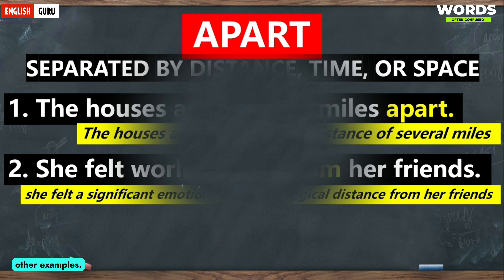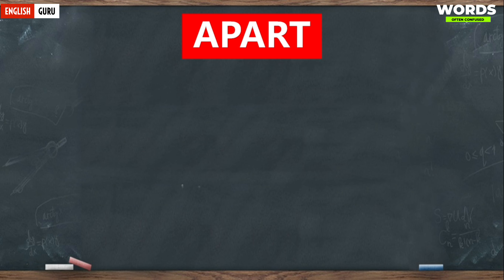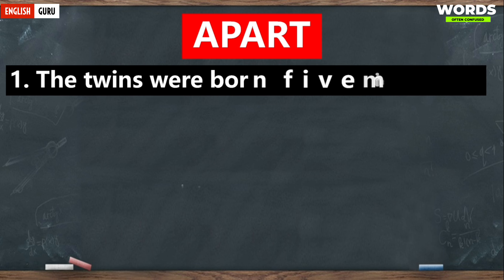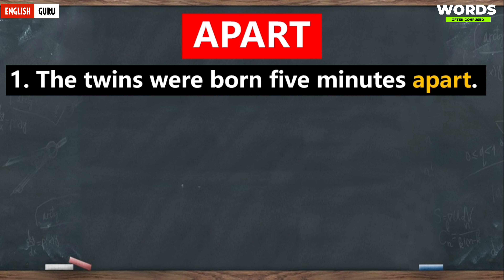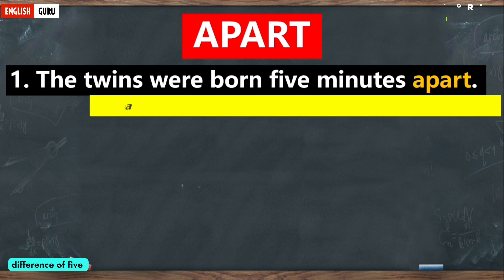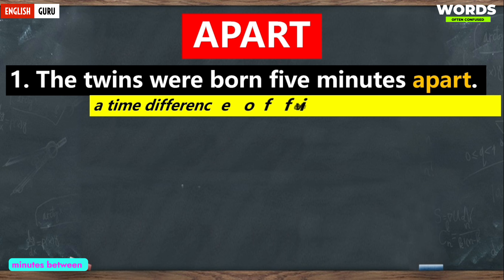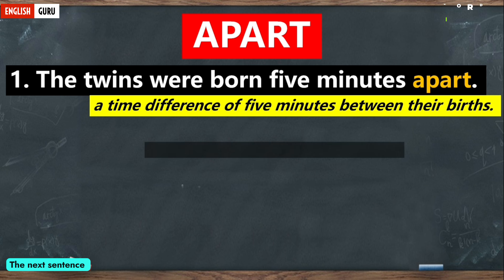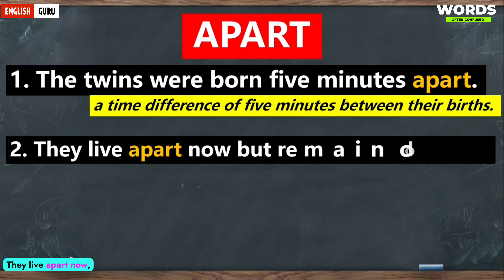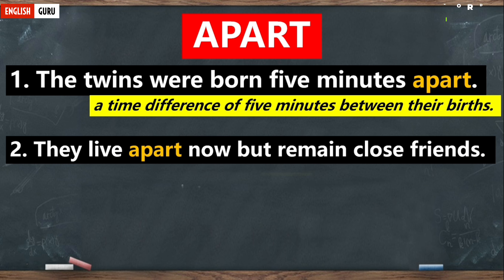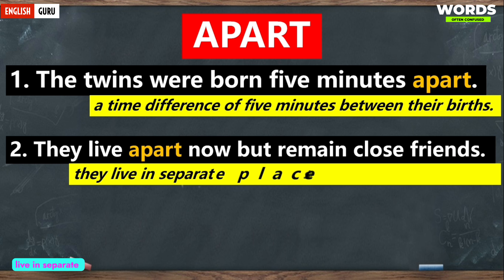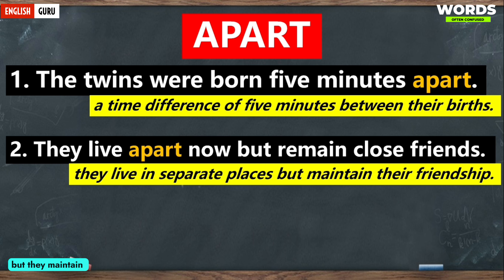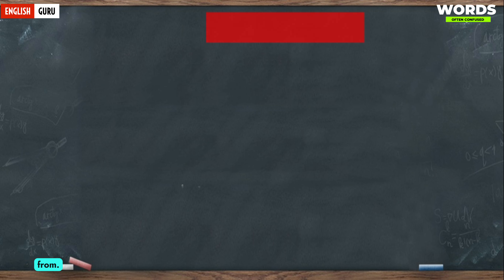Let's look at more examples. 'The twins were born five minutes apart' means there was a time difference of five minutes between their births. 'They live apart now but remain close friends' means they live in separate places but they maintain their friendship.